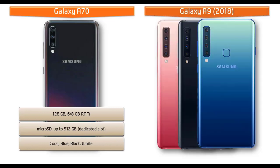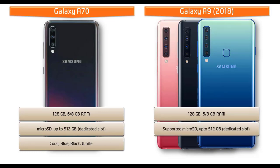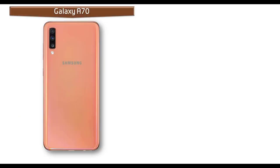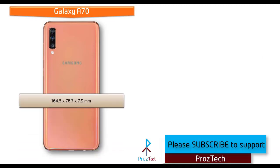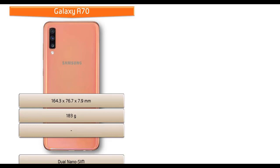Moving on to Galaxy A9, it comes with 128 GB of primary storage with 6 or 8 GB RAM, and up to 512 GB microSD support is also available as a dedicated memory slot. Samsung has produced this device in caviar black, lemonade blue, and bubblegum pink colors. Its dimensions measure 164.3 x 76.7 x 7.9 mm of height, width, and thickness, weighing 183 grams with dual nano SIM option.